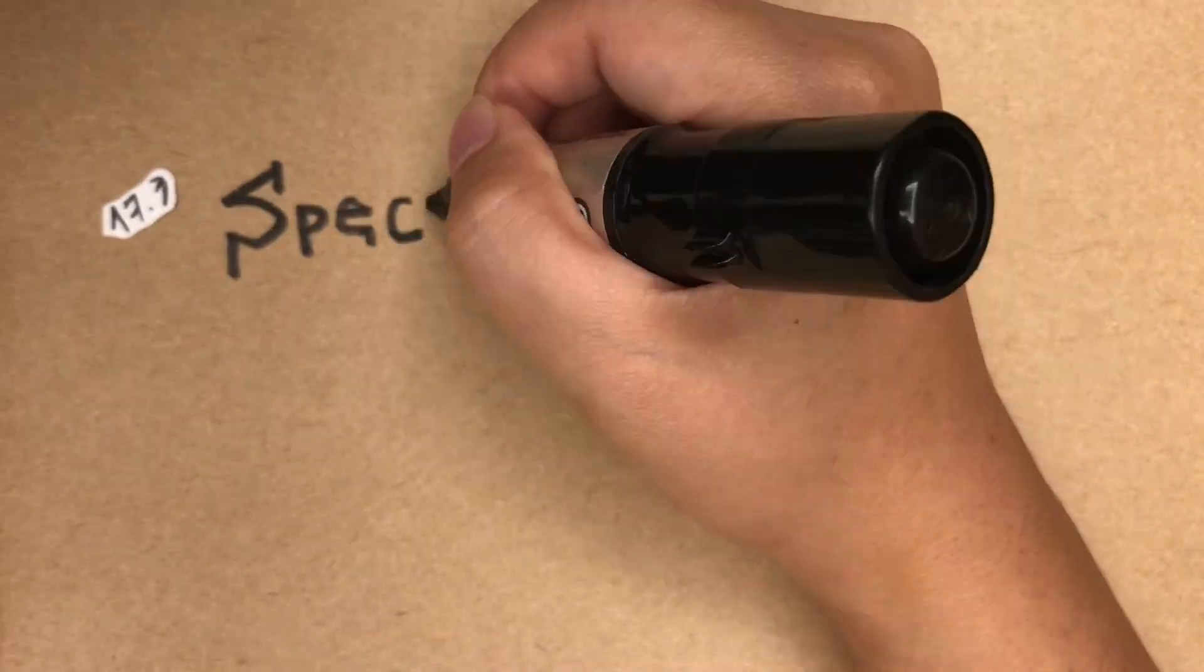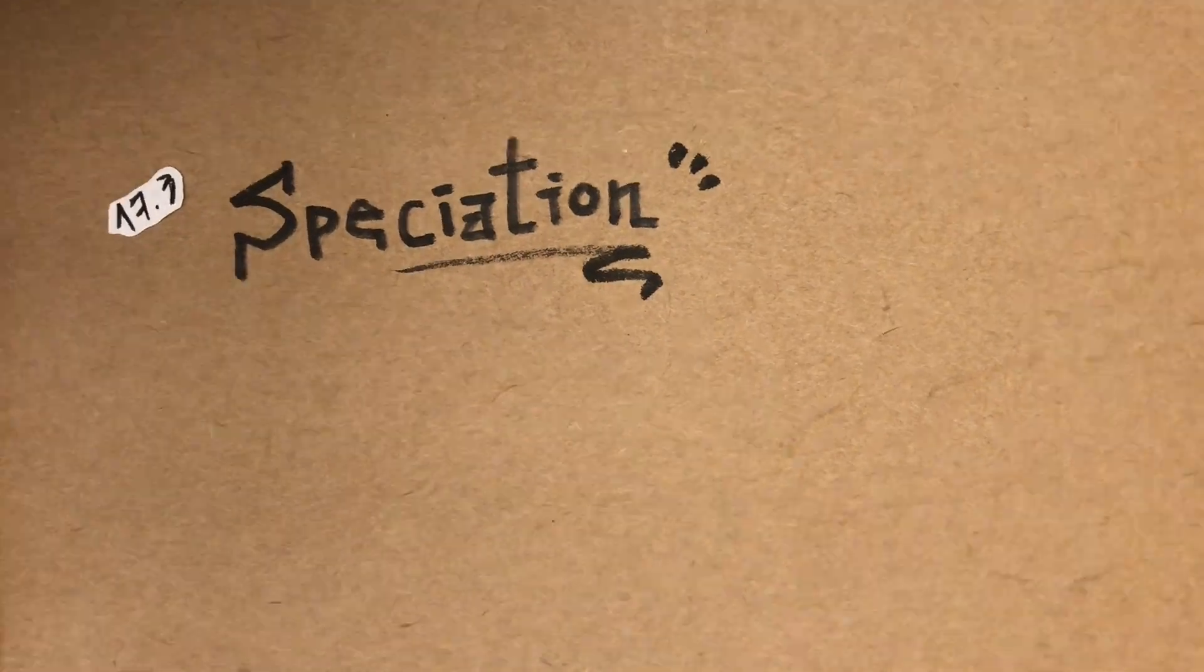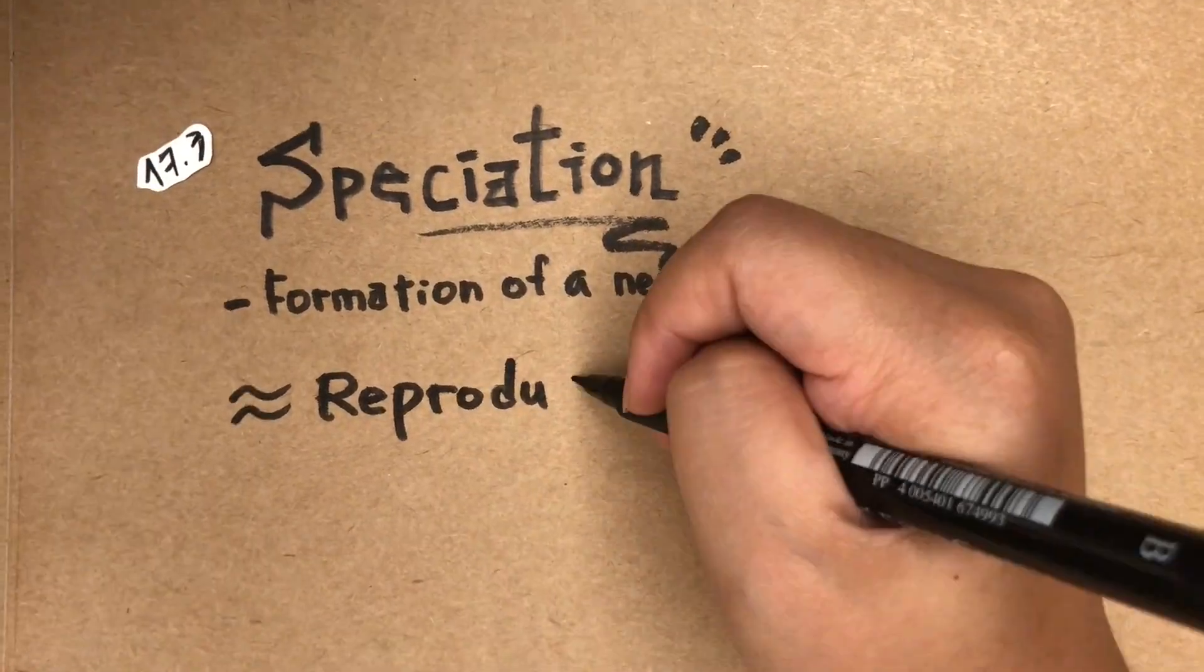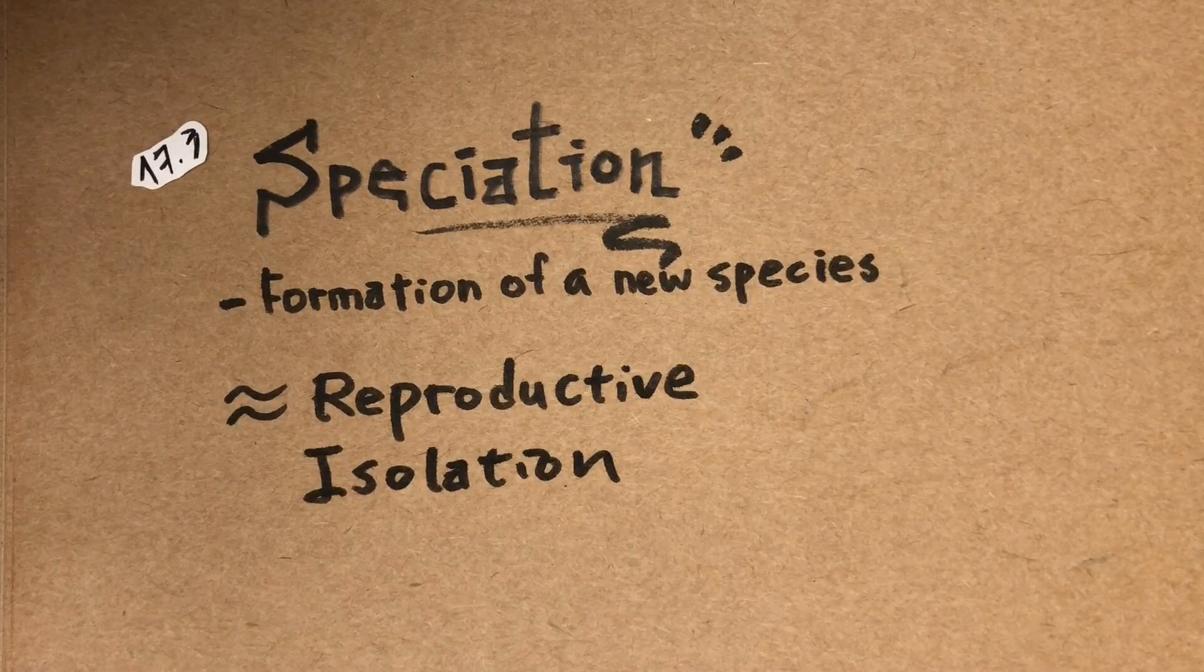So, section 17.3 compared to 17.2 is relatively much simpler. Speciation is the main idea here. It means the formation of a new species.